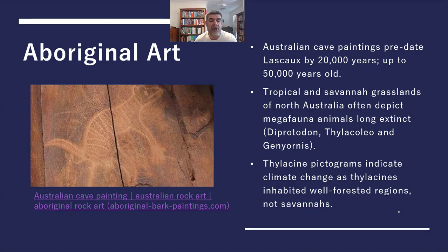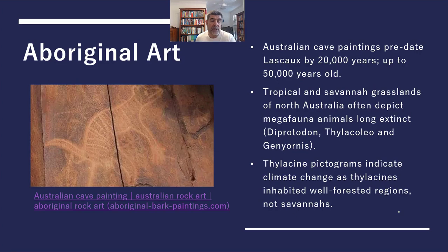These include the giant diprotodon, the marsupial lion, thylacleo, and some of the giant flightless birds like genyornis. But we also see diagrams or pictures, like the one that you see on the slide here, of the thylacine.